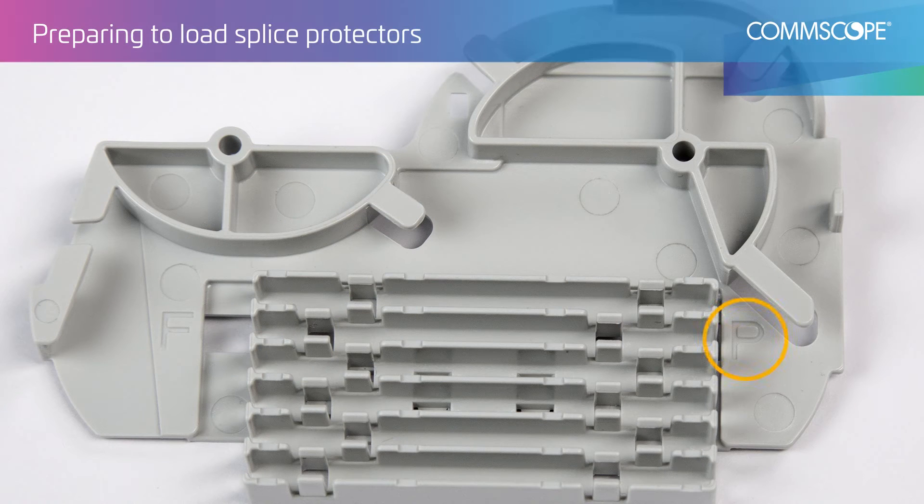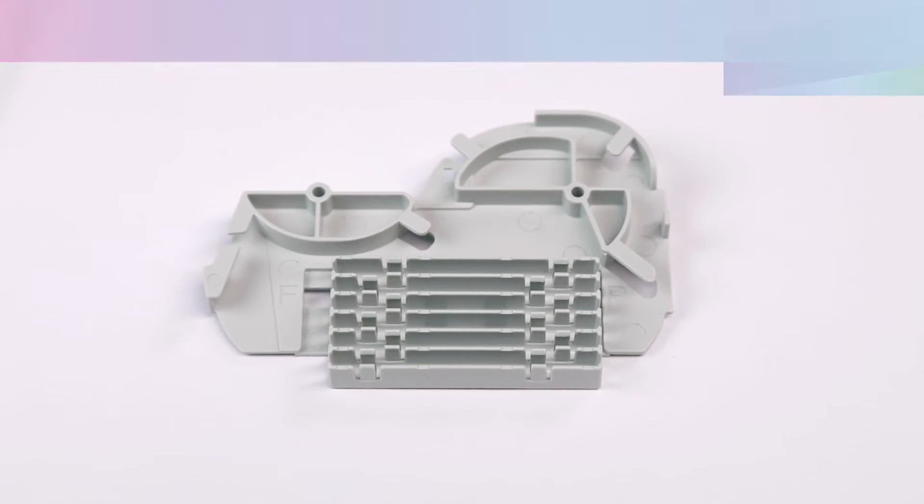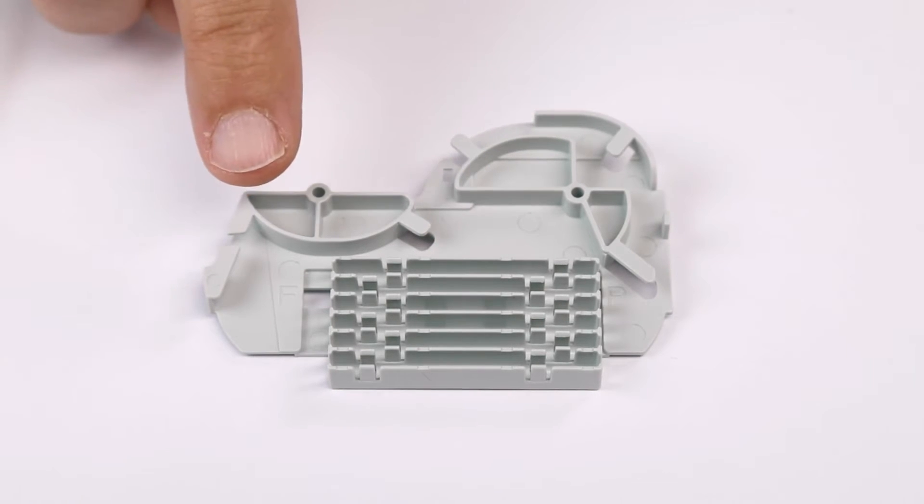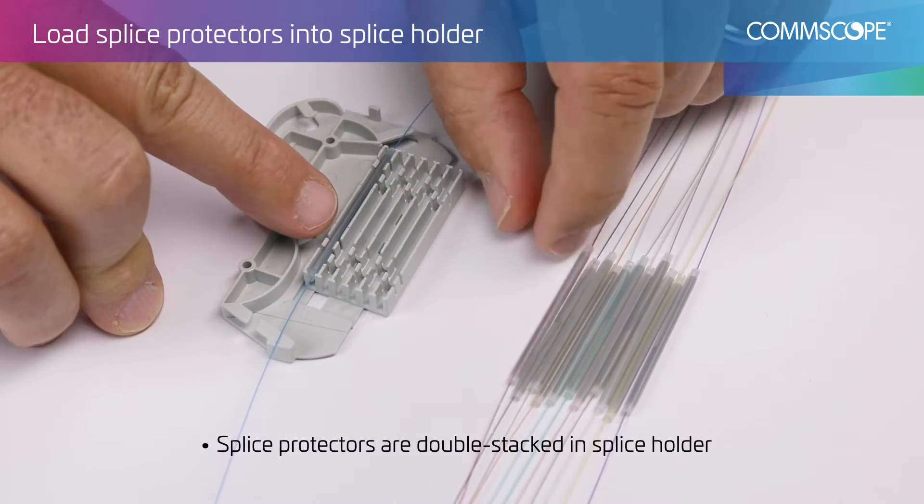Locate P and F markings on the spool. When loading splice protectors, ensure the pigtail is on the P side and the feeder is on the F side. Load splice protectors into splice holder.